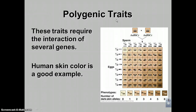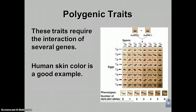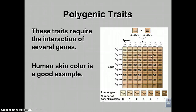This individual is heterozygous for each of the three genes in this example — there's an A gene, a B gene, and a C gene — and the other parent has the exact same genotype and the same skin color. What happens is the more dominant alleles you have, the darker the skin color; the more recessive alleles you have, the lighter the skin color. If I did my math right, there should be 64 boxes in a Punnett square here, which is very difficult to work out.